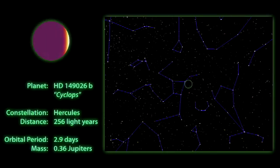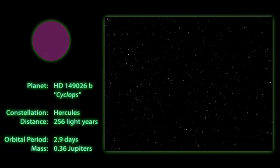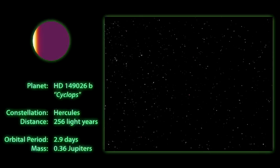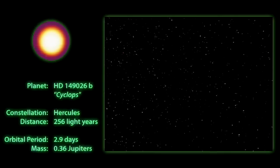Our first X-Planet, Cyclops, can be found in the constellation Hercules, orbiting a sun-like star that's about 250 light-years away.